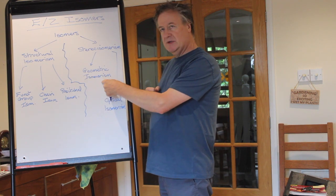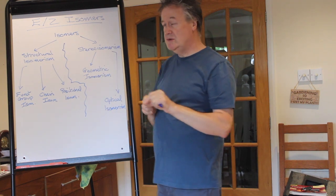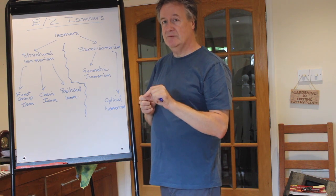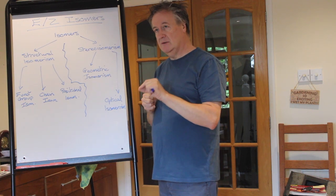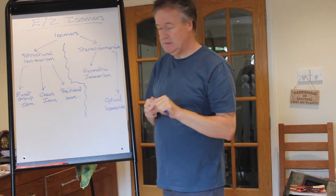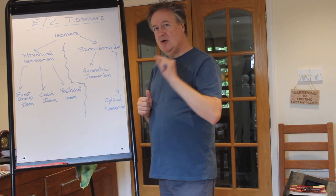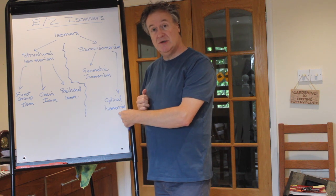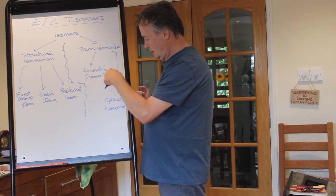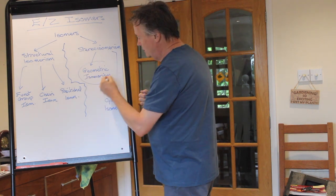Stereoisomerism comes in two types. Geometric isomerism is the E/Z, and also cis and trans. The cis and trans is not so useful as E and Z in terms of coming up with a unique name for a compound, because every organic compound has to have a unique name so it cannot be mistaken and interpreted as something else. The other type is optical isomerism - not for today, that's more year 13 rather than year 12 in almost every A-level course.